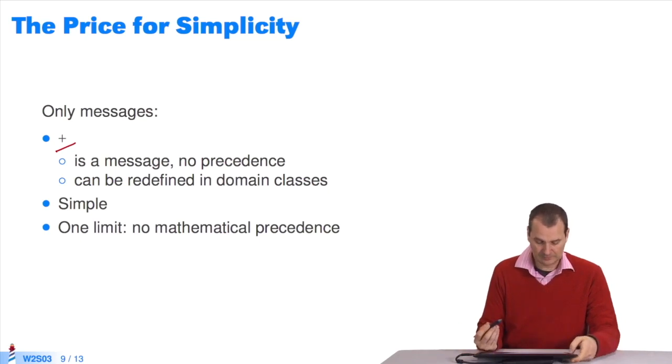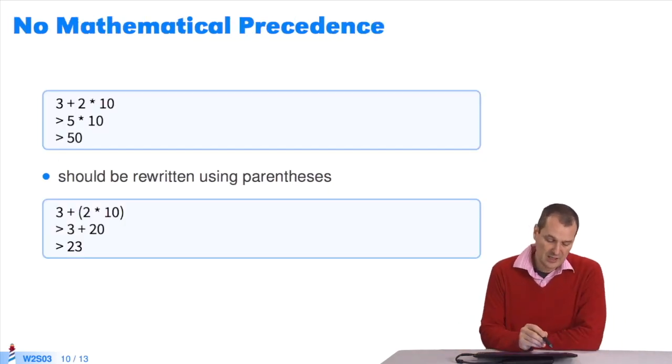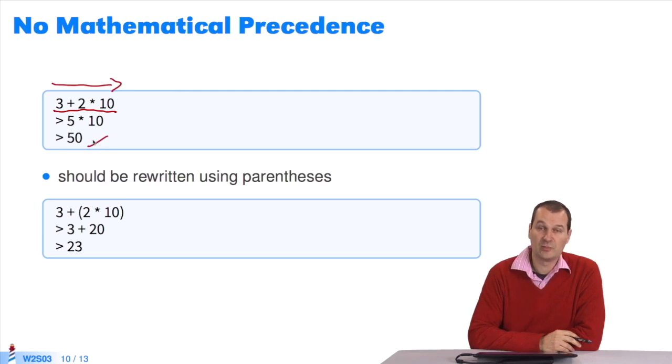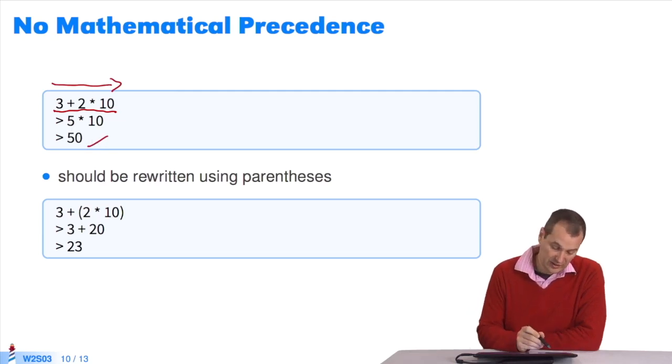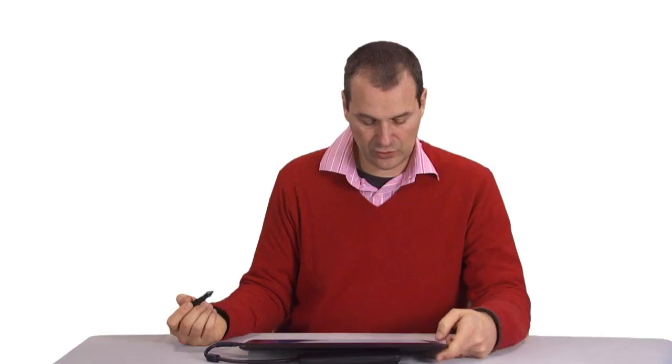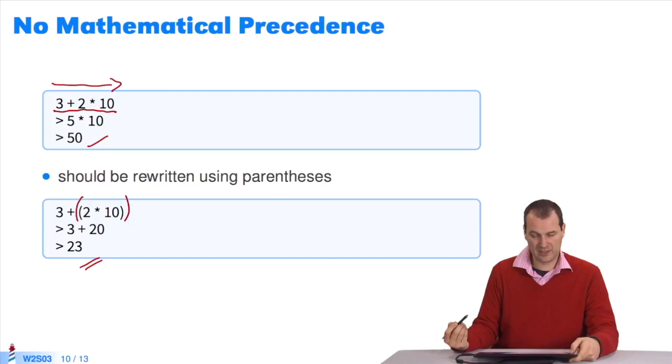Let's see this with an example. In this expression, there are two operators. Two binary messages. I execute from left to right. I get five and it returns 50. It's not what I learned in school. To disambiguate this, I have to rewrite this using parentheses around asterisk. You have to be careful when using arithmetic operations in Pharo, since mathematical operators are just messages.